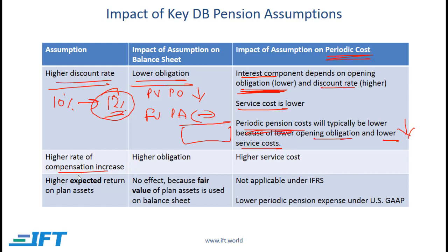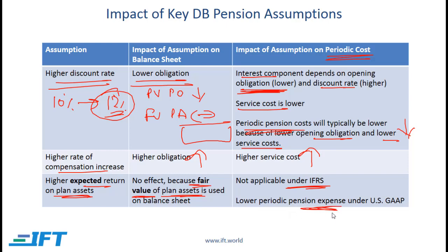A higher rate of compensation increase results in a higher obligation and a higher service cost. Regarding the higher expected return on plan assets: this has no impact on the plan assets themselves because plan assets are measured at fair value. The higher expected return on plan assets assumption is not used under IFRS. Under US GAAP, it will result in a lower pension expense on the income statement, and we will see an example of how this works.